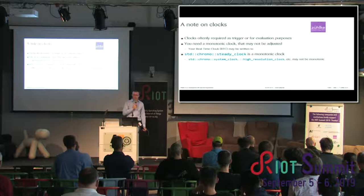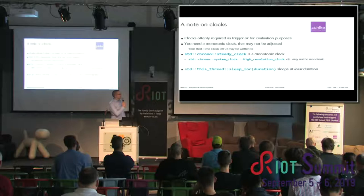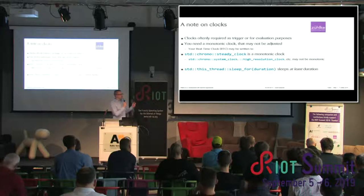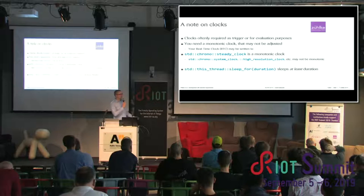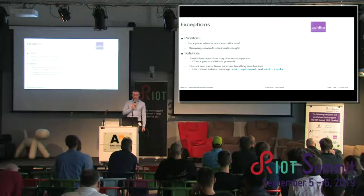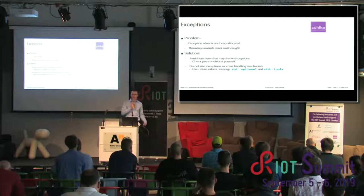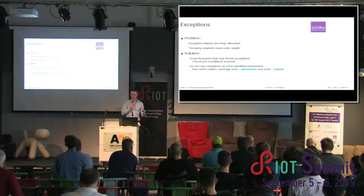For periodic triggers, there's the sleep_for function with a duration — it's equivalent to usleep or clock_nanosleep in C — but it sleeps at least the given duration, not shorter, so you may need to account for that. Regarding exceptions: the problem is that exception objects are usually heap-allocated, which may trigger the memory allocator, causing mutex locks and unbounded execution time. Also, throwing an exception unwinds the stack until the exception is caught. So exceptions are generally not desired in a real-time context.